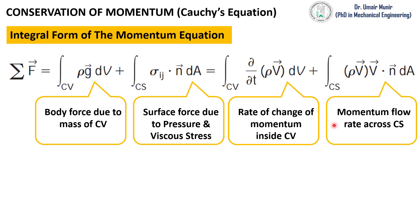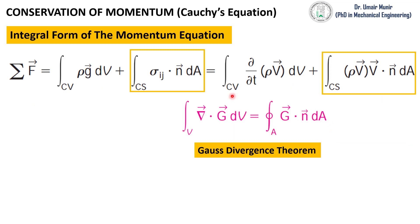In this integral form of momentum equation we have two surface integrals that should be converted into volume integrals, and we will do it by using the divergence theorem which relates the volume integrals with the area integrals.